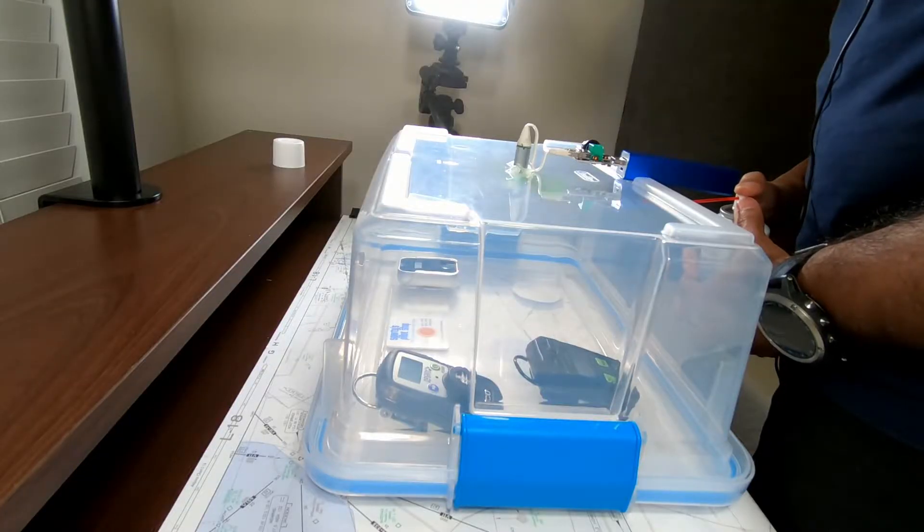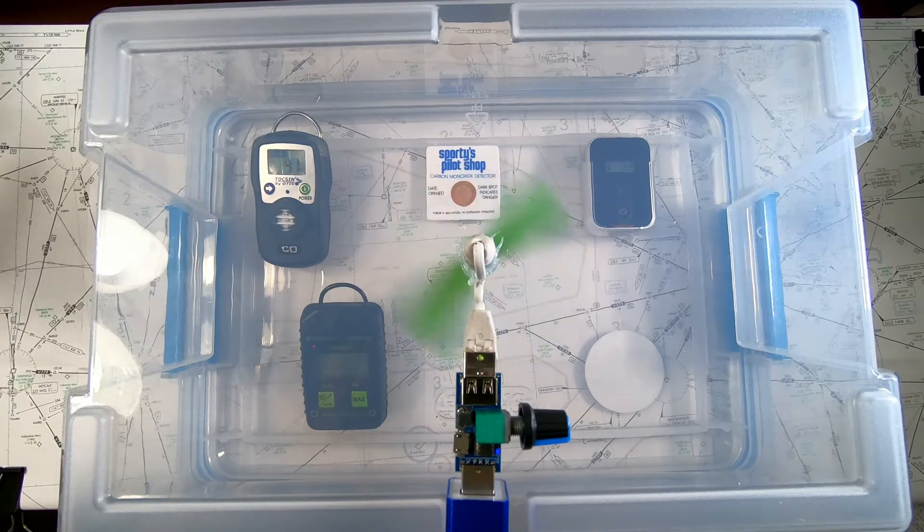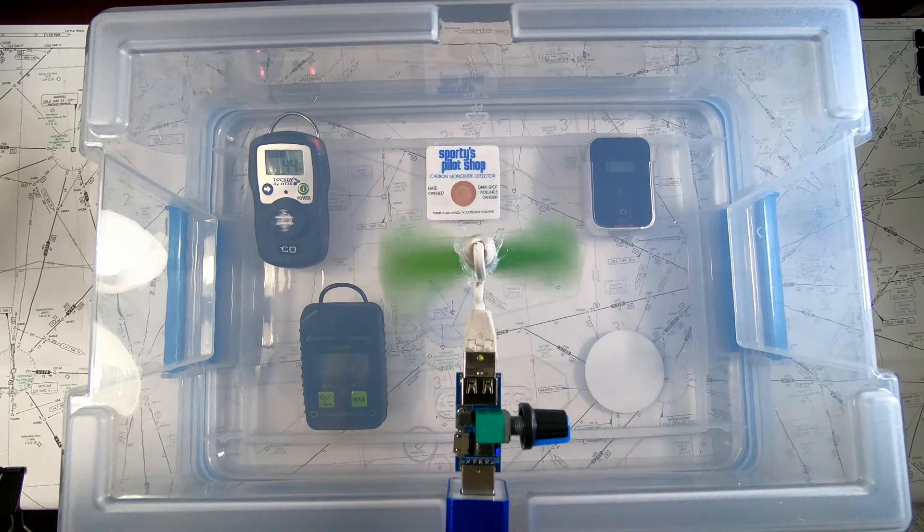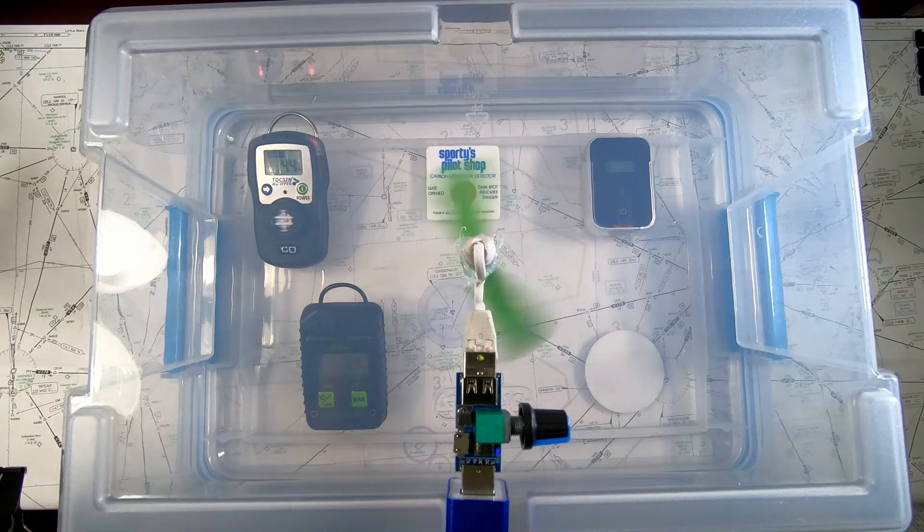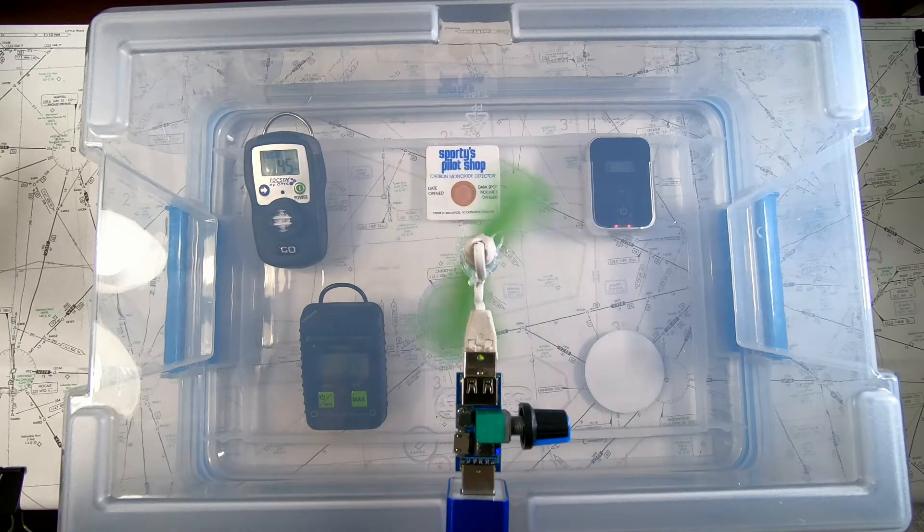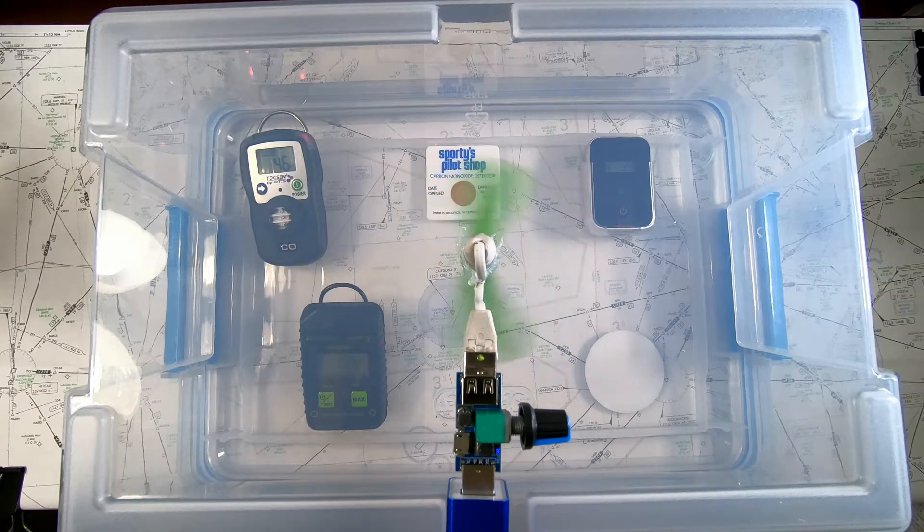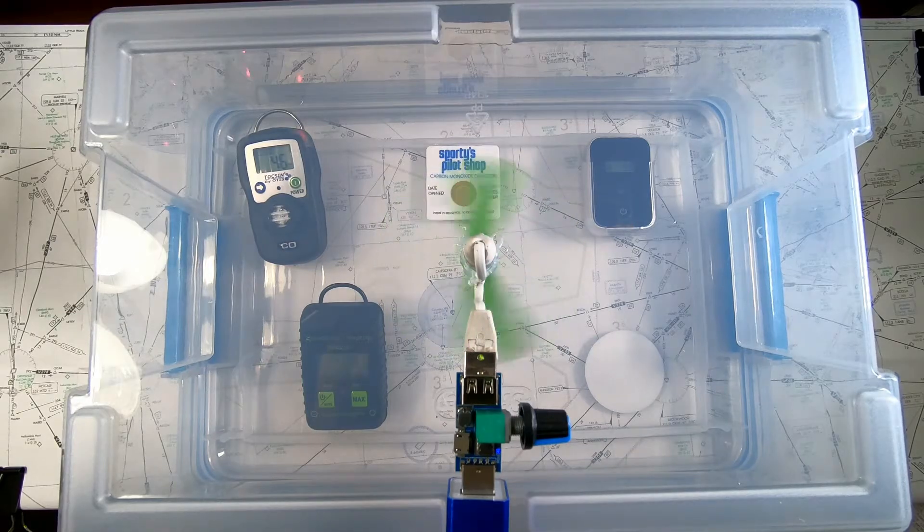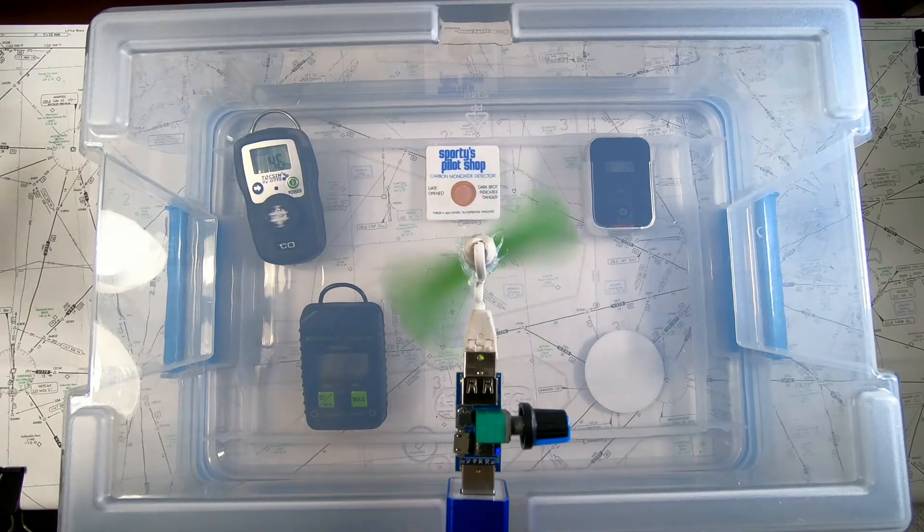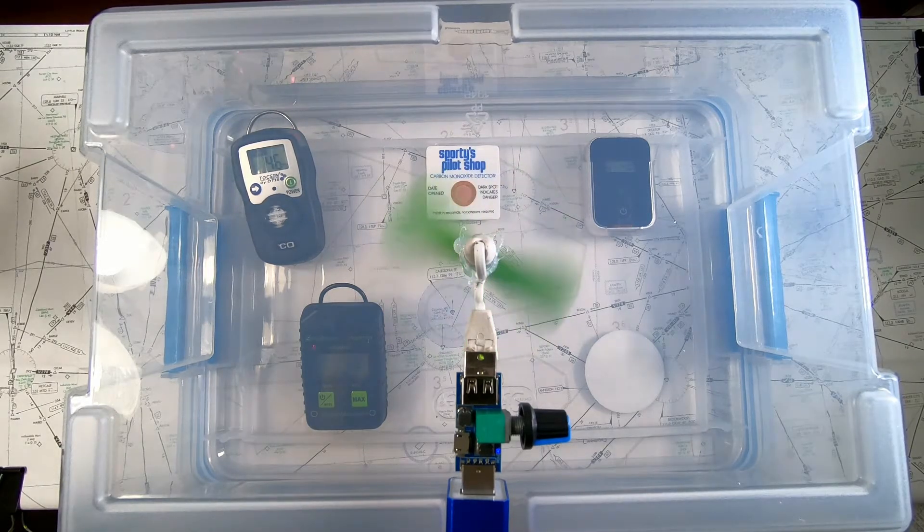Alright, let me add one more. Tocsin 3 started beeping. So as the SensorCon and all the three units actually started beeping. Tocsin 3 is showing me the highest concentration of 45. SensorCon 35 and the small unit 39. So Tocsin 3 at this point seems to be showing the highest amount compared to the other two units.